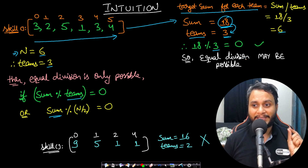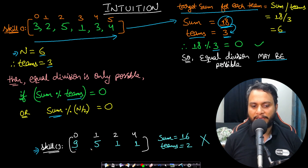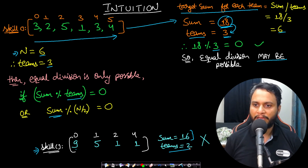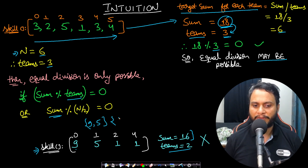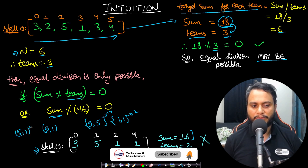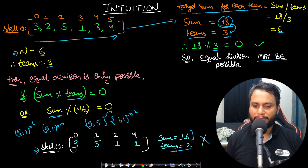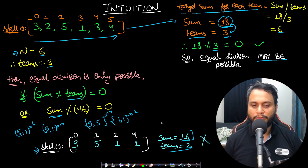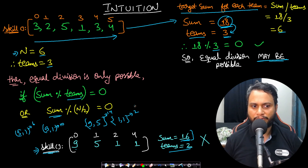If it is divisible, it may be possible to do equal division — but not always. For example, with array 9, 5, 1, 1: 4 people, 2 teams, sum = 16, and 16 mod 2 = 0. But you cannot form 2 teams with equal skill sum — (9,5) and (1,1) give sums 14 and 2; (9,1) and (5,1) give 10 and 6. The target of 8 per team is unreachable, so it returns -1. That's why divisibility is necessary but not sufficient.